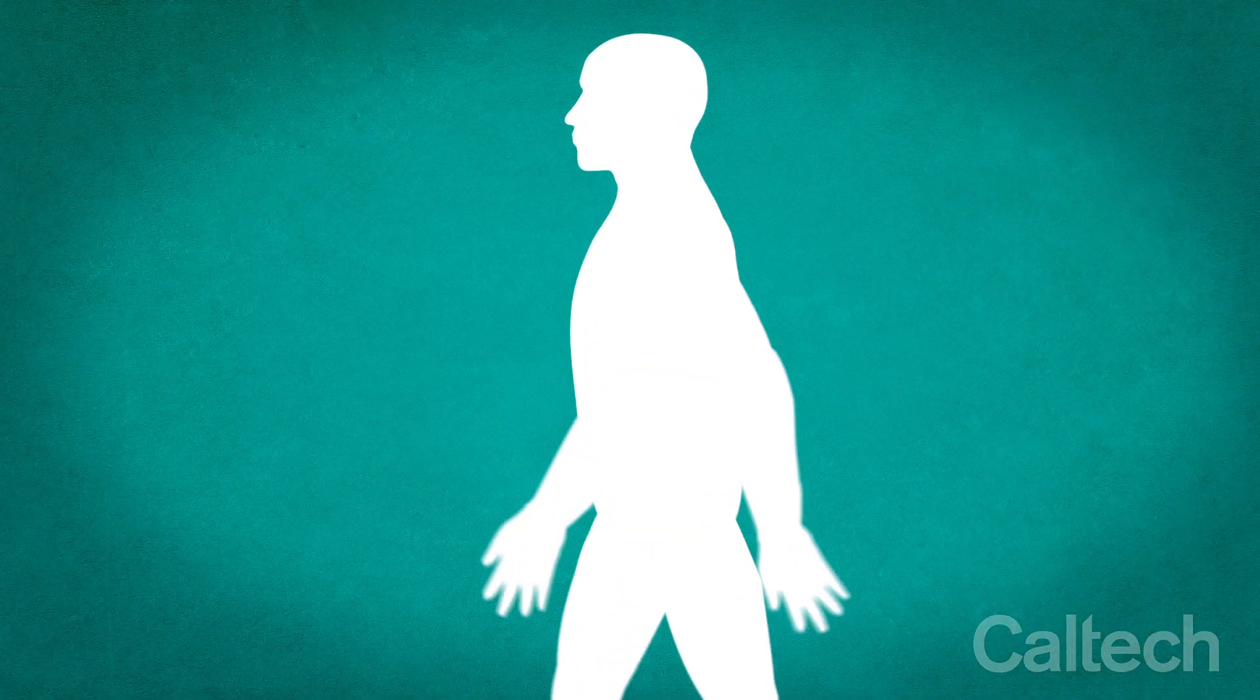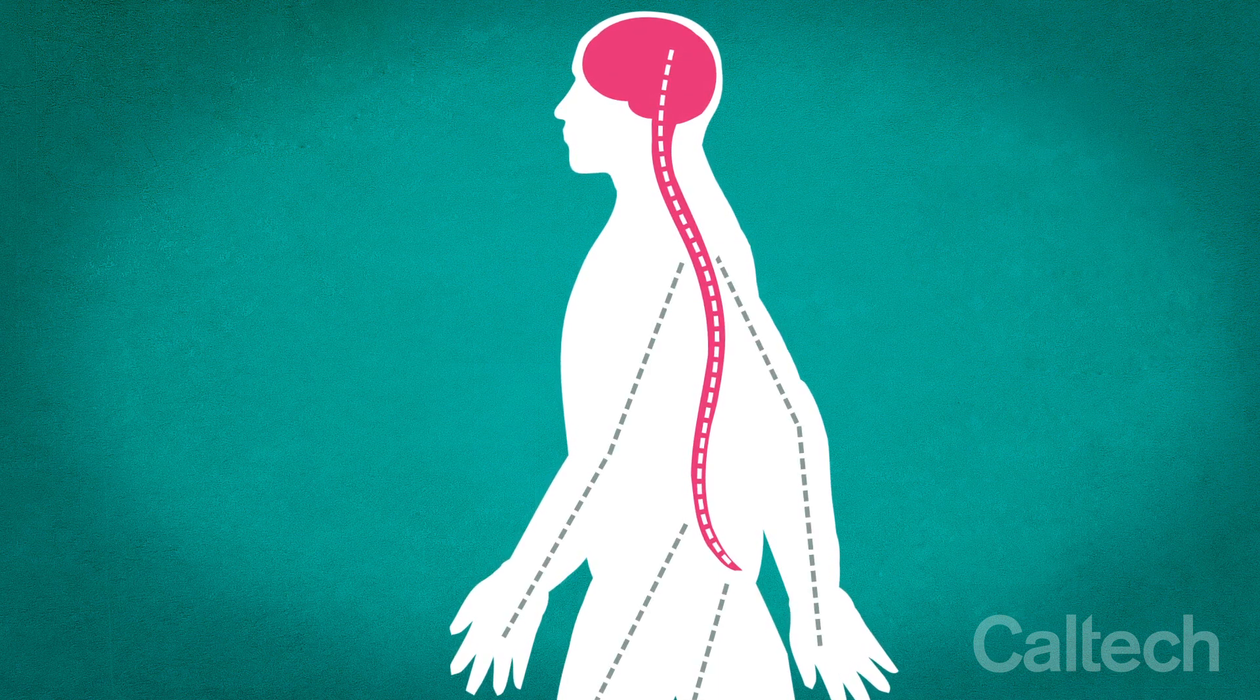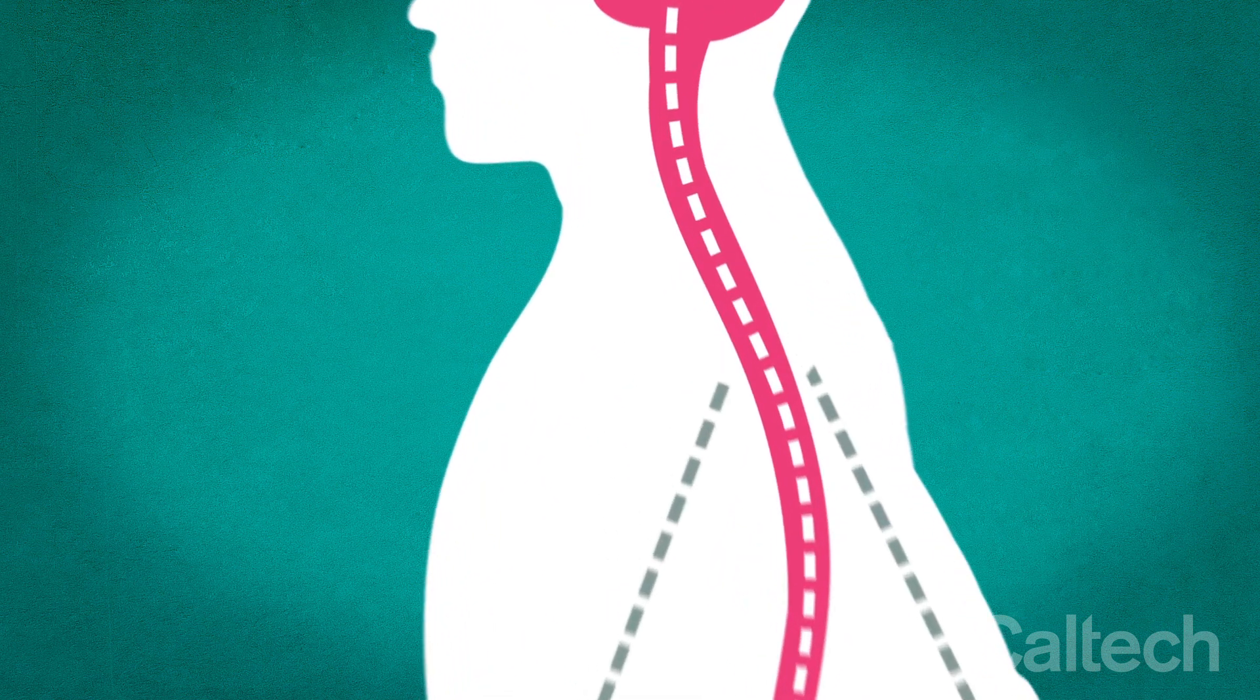Our ability to move depends on our spinal cord transmitting signals between our brain and limbs. That's why severe spinal cord injuries often result in paralysis.